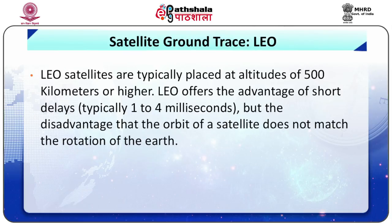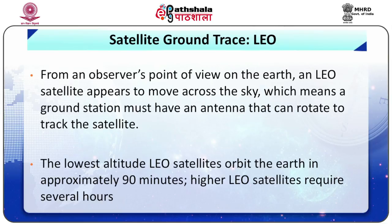LEO satellites are typically placed at altitudes of 500 km or higher. LEO offers the advantage of short delays but the disadvantage that the orbit of the satellite does not match the rotation of the earth. Thus, from an observer's point of view on the earth, an LEO satellite appears to move across the sky, which means a ground station must have an antenna that can rotate to track the satellite, as shown in figure 5.